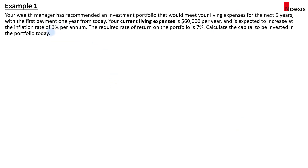In Example 1, a wealth manager has recommended an investment portfolio to meet your living expenses for the next five years, with the first payment one year from today. Your current living expenses are $60,000 per year, expected to increase at the inflation rate of 3% per annum. The required rate of return on the portfolio is 7%. Calculate the capital to be invested today.